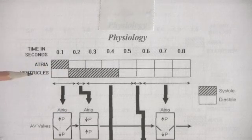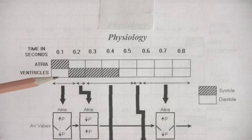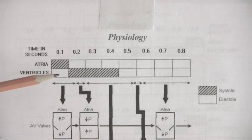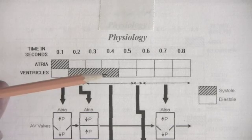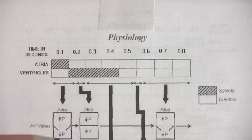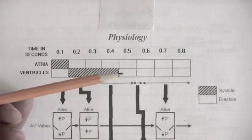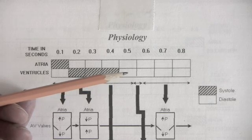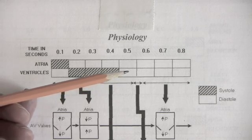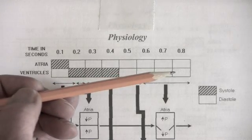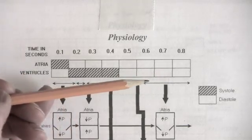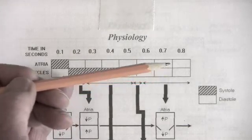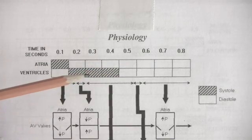In the first tenth of a second in the ventricles, the ventricles are in diastole. But in the second, third, and fourth tenth of a second, the ventricles are in systole. In the remaining tenths of a second in the cardiac cycle, the ventricles are in diastole. Notice that the heart rests more than it works.